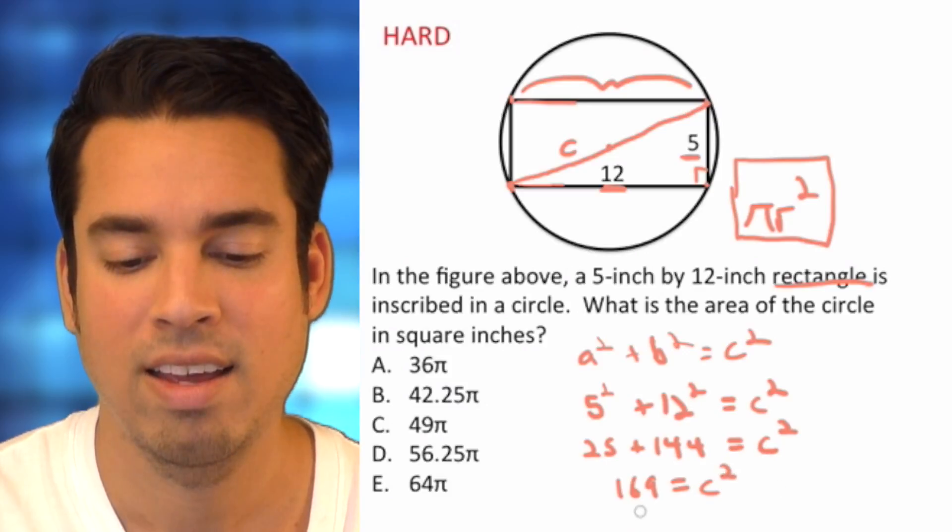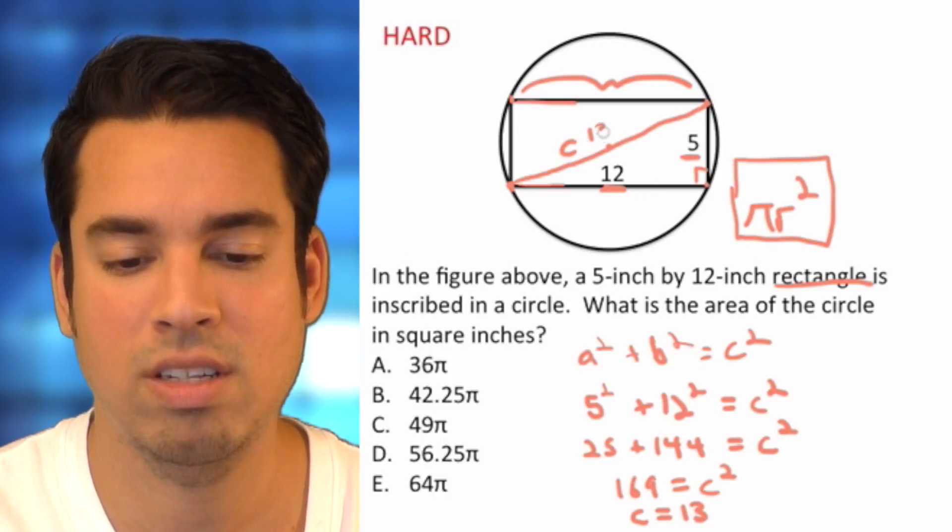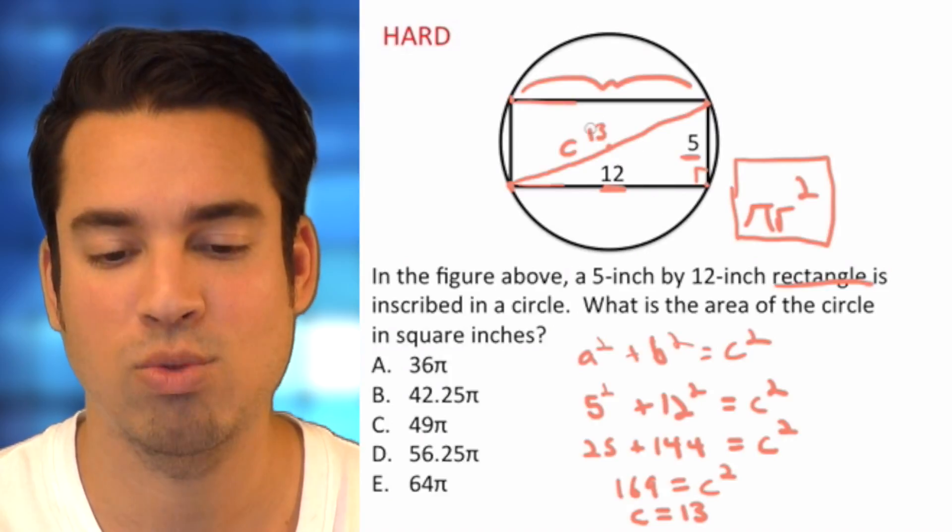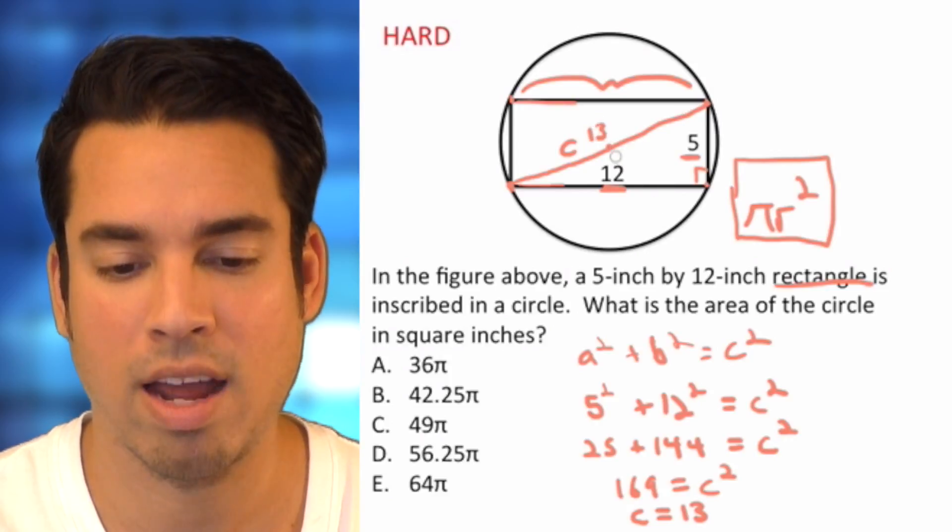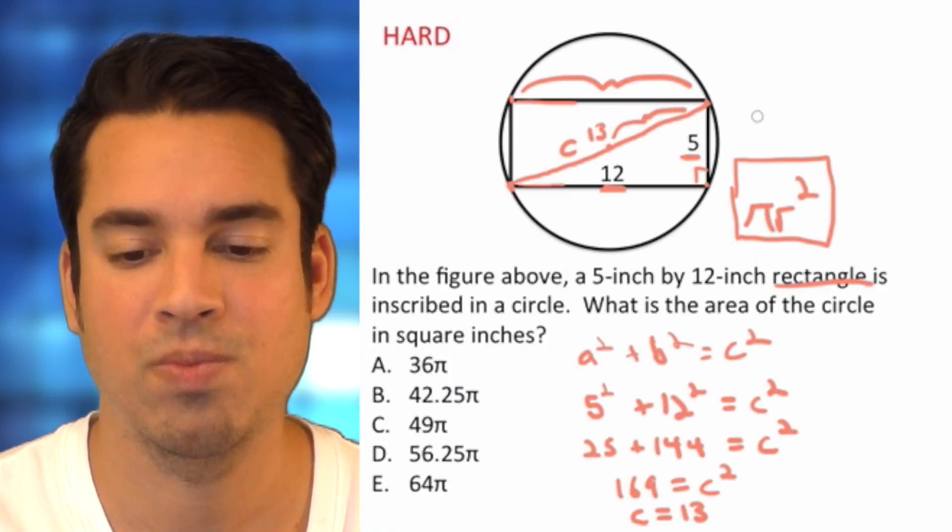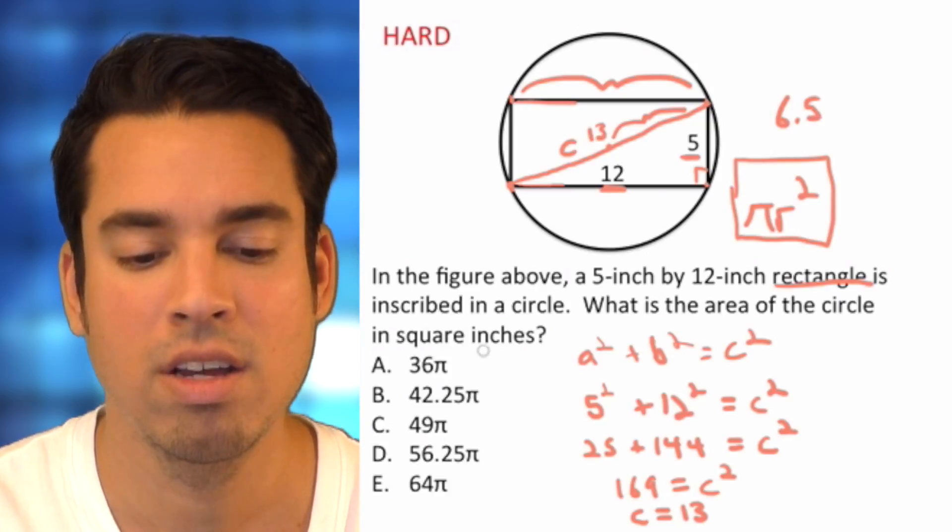So to get c we just take the square root of 169, and c equals 13. Okay, so that means this value here is 13, but that is the diameter. So what is the radius? Well, we have to take half of this. Half of this would be the radius, so half of 13 is 6.5.